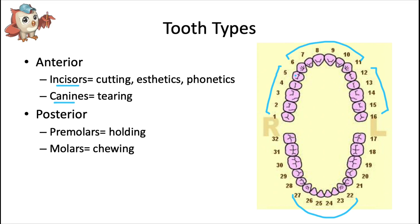Canines are closer to the corners of the mouth — sometimes called eye teeth because if you drew a line straight down from the eyes, they'd be pretty close. They're longer and pointed for tearing food. The molars are for chewing, milling, and grinding food. Premolars also contribute to chewing but to a lesser extent because they're smaller, though they can definitely hold food as it's being chewed.